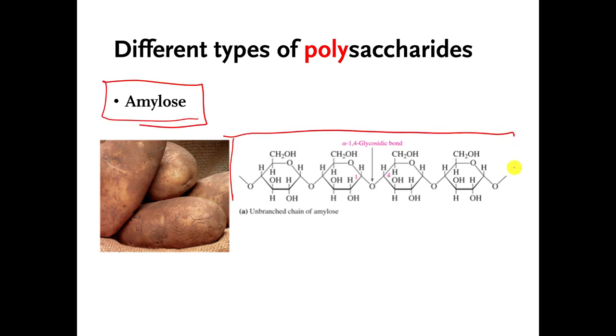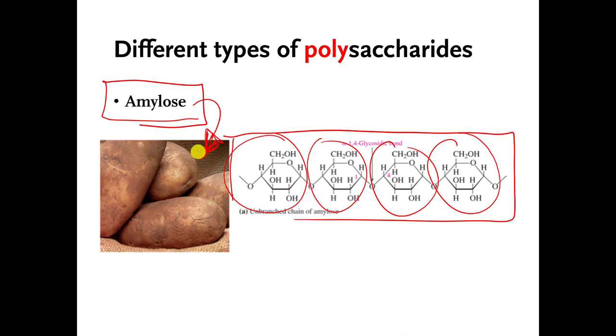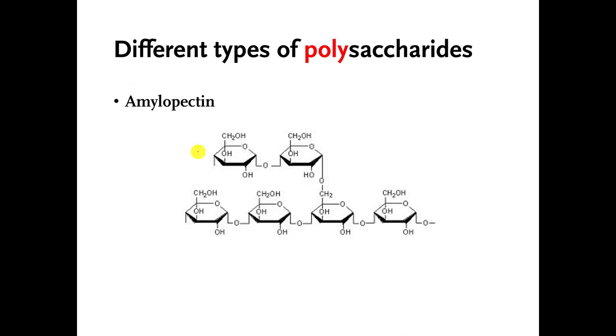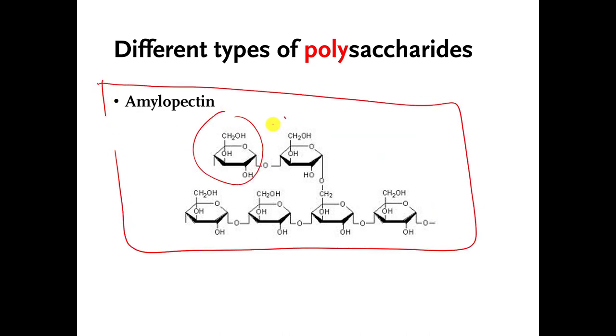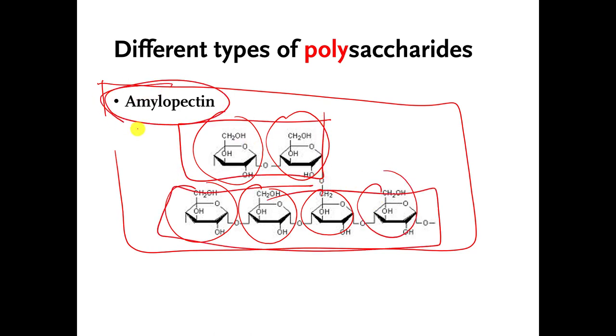This is a polysaccharide called amylose. It's a bunch of glucoses connected to each other over and over again. This is largely the polysaccharide that's found in things like crackers and potatoes. You don't need to know that one. This is a polysaccharide called amylopectin. This is also glucoses stuck to each other over and over again, but you can see there's a branch here.